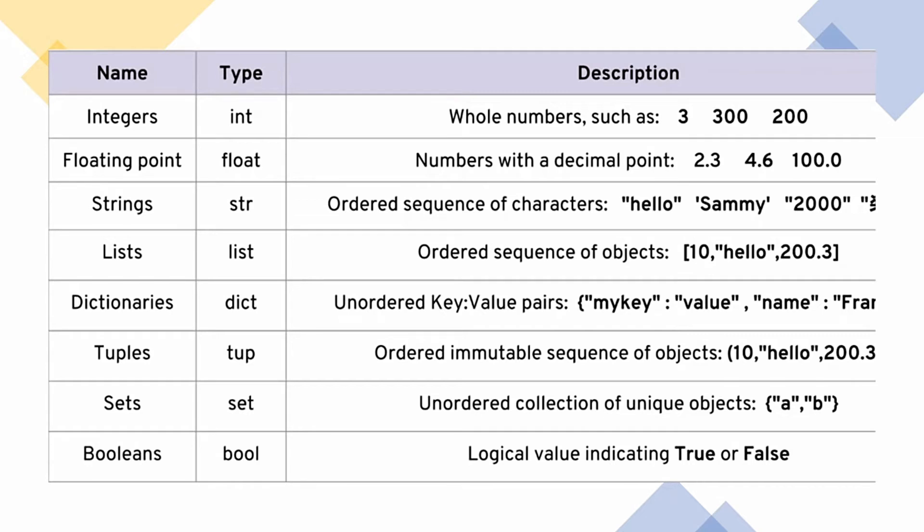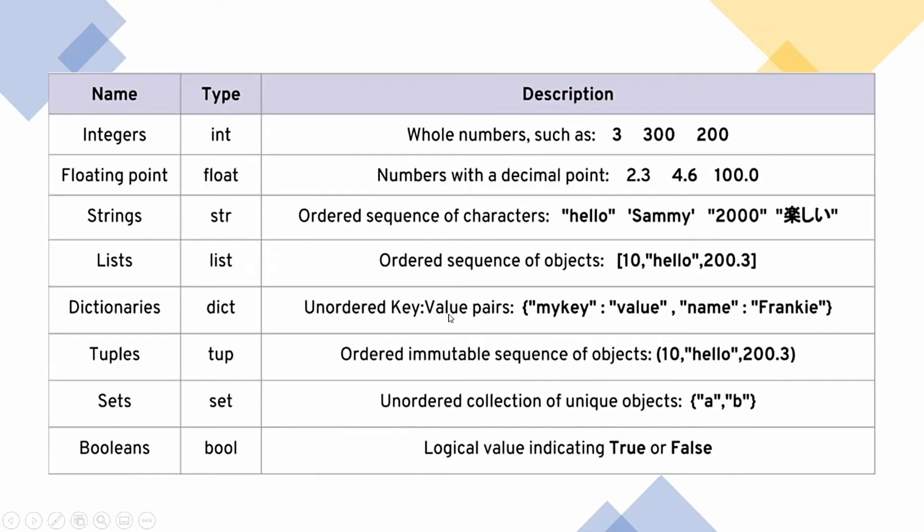Then there comes floating point numbers. Now, these floating points are numbers which have a decimal point in it: 2.3, 4.6, even as you see there is 100.0. Now, if you have used a decimal, we know 100.0 is 100. But if we have used a decimal dot in there, then that becomes a floating point number. And its type becomes float. In integer, its type becomes int.